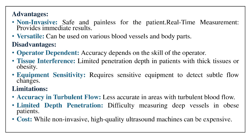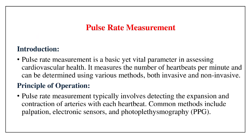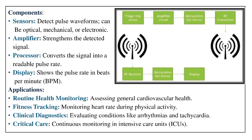Pulse Rate Measurement Introduction: Pulse rate measurement is a basic yet vital parameter in assessing cardiovascular health. It measures the number of heartbeats per minute and can be determined using various methods, both invasive and non-invasive. Principle of Operation: Involves detecting the expansion and contraction of arteries with each heartbeat. Common methods include palpation, electronic sensors, and photoplethysmography (PPG). Components: Sensors detect pulse waveforms and can be optical, mechanical, or electronic. Amplifier strengthens the detected signal. Signal Processor converts the signal into a readable pulse rate. Display shows the pulse rate in beats per minute (BPM).